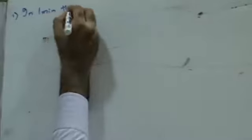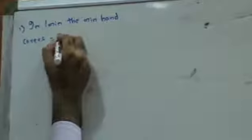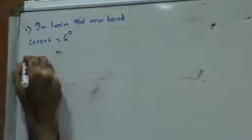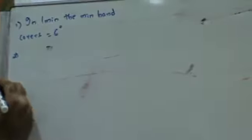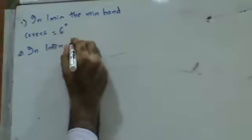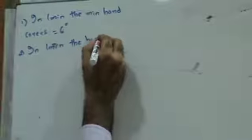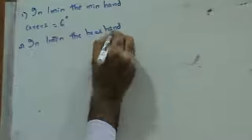In one minute, the minute hand covers six degrees. In one minute, the hour hand covers one and a half degrees.